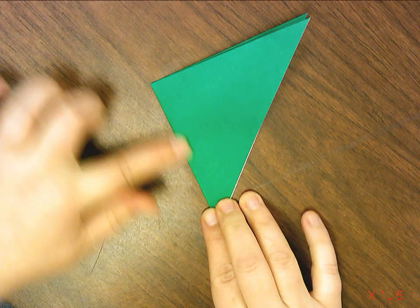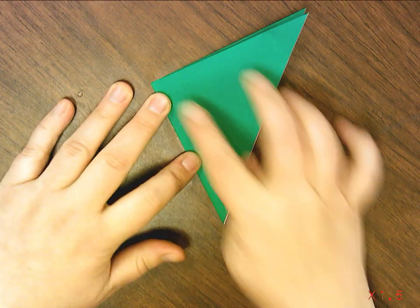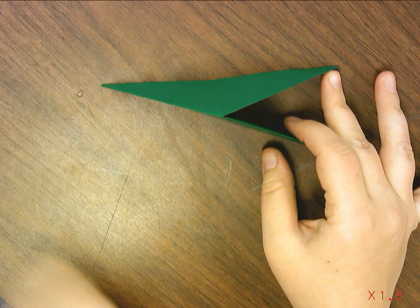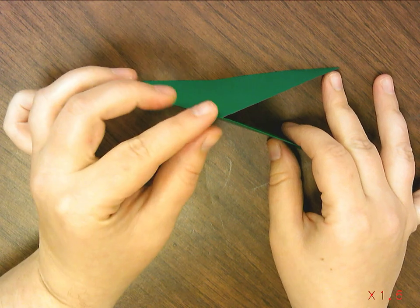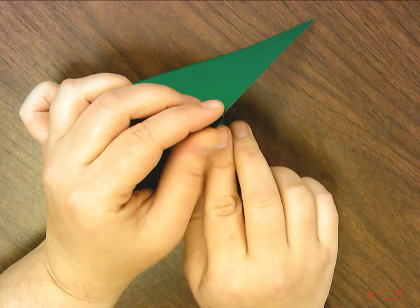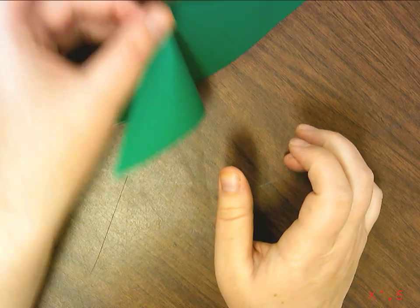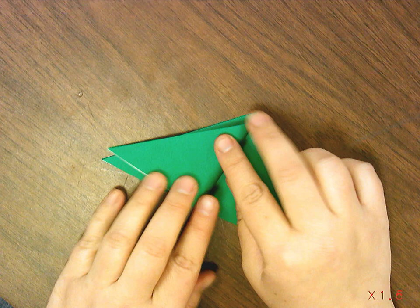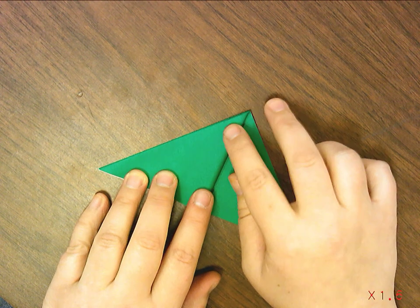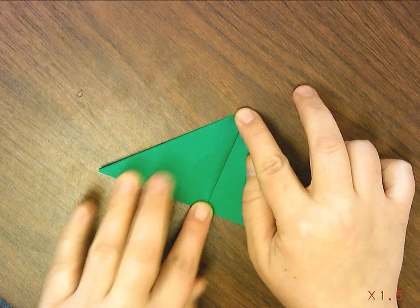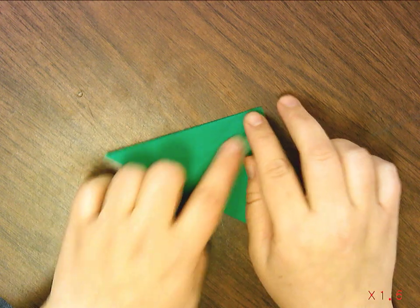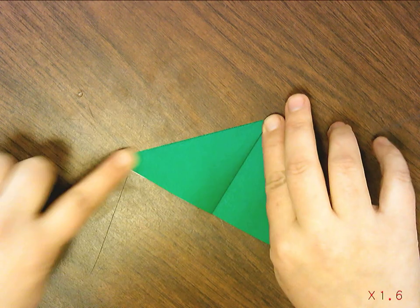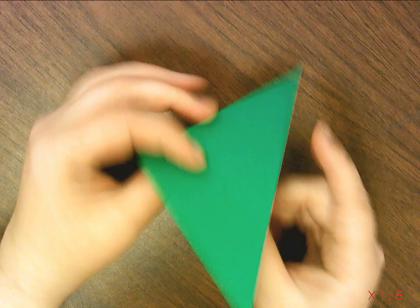All right. So now you have another triangle that is joined like that. You're going to take each of these sides and fold them back at the point. Like that. You're going to do the same thing on the other side. You'll notice I am sharpening my creases because it makes it easier to fold. Other side.